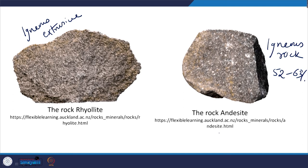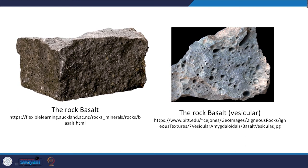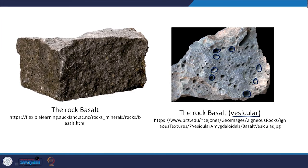The next rock to discuss is basalt. This slide shows two views: regular basalt and vesicular basalt. What do we understand by vesicular? You can see these formations in the rock. When the magma erupts, a lot of gas may be present, and if it is not able to escape, it cools down in the rock — that gas portion creates this vesicular kind of structure. That is the difference between these two basalts.